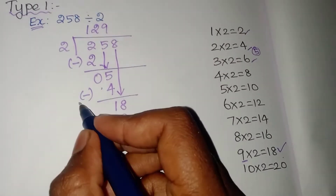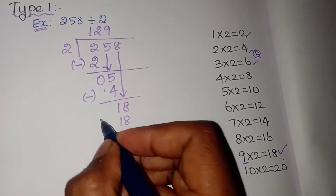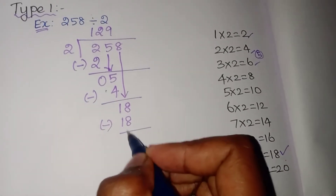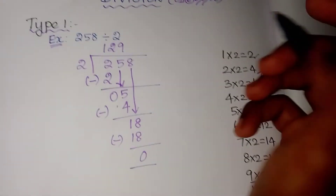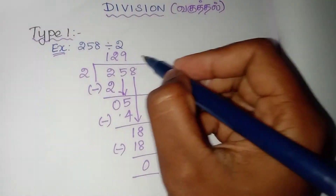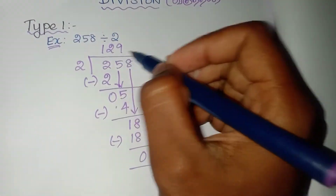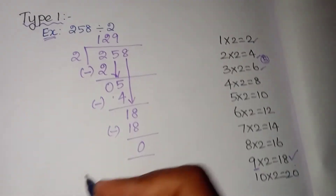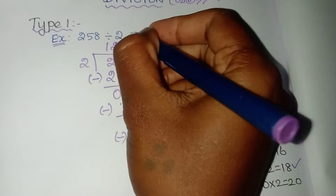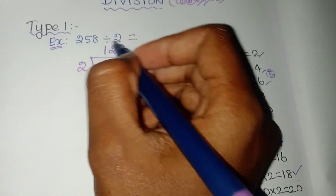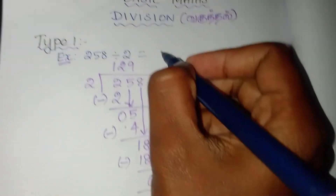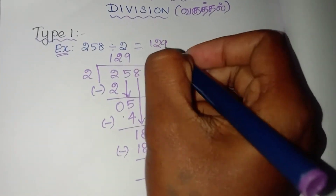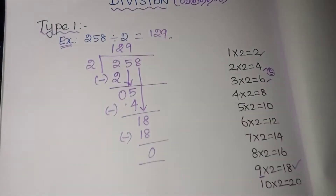So what is the next step? Subtraction. 18 minus 18 equals 0. So the answer is 129. 258 divided by 2 is 129.